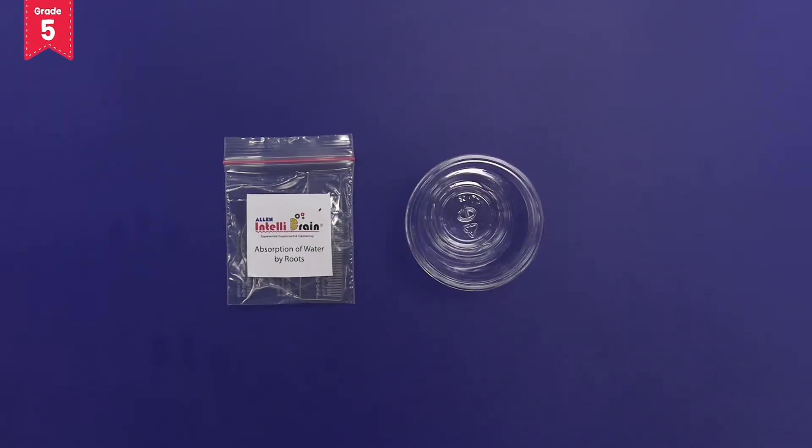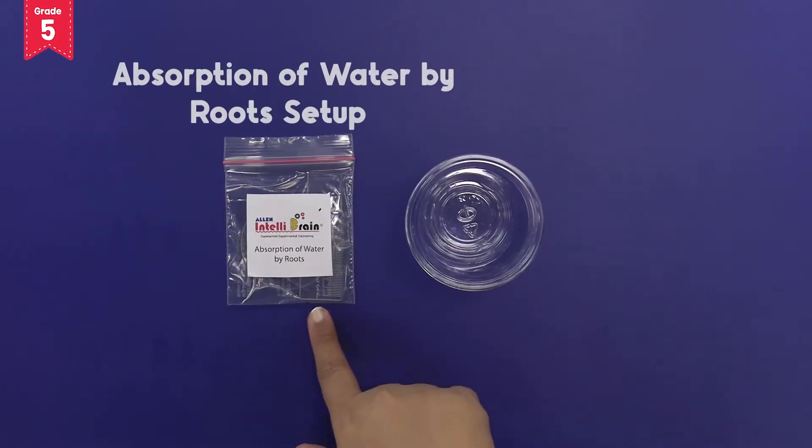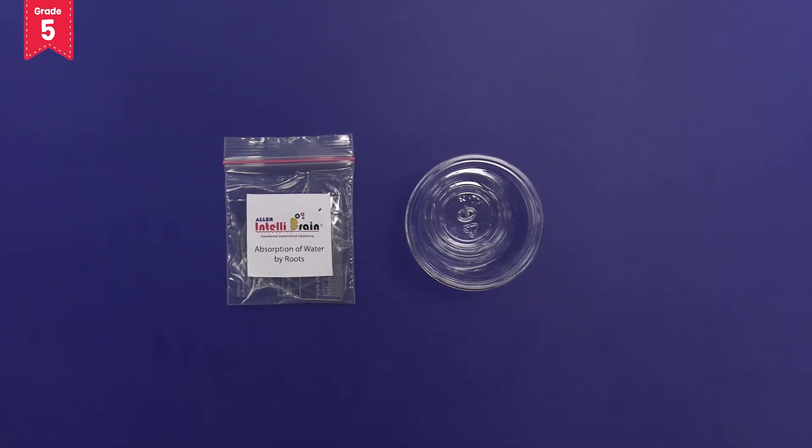From the kit, take out the absorption of water by roots setup. Also take out one disposable glass from your smart box.